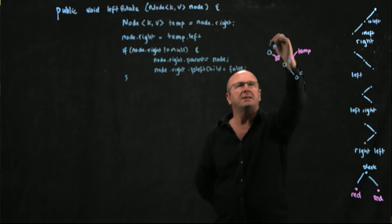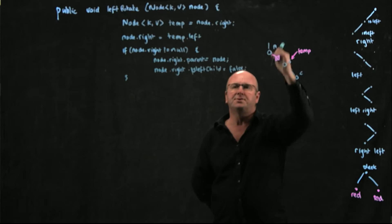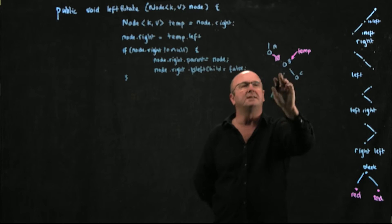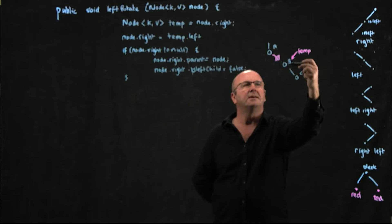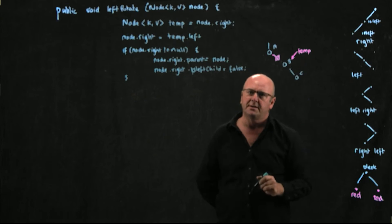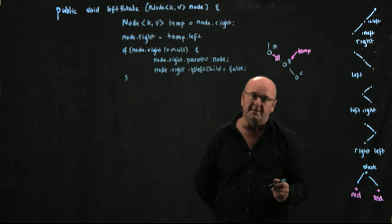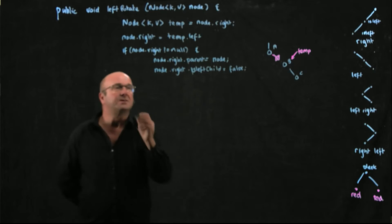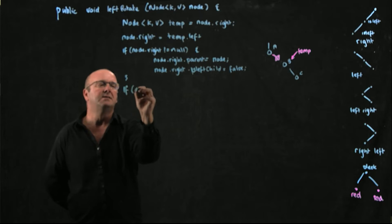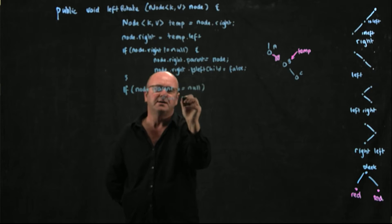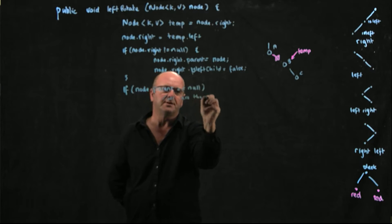Now what we need to do is check whether we have a parent. If we have a parent, we need to set temp's parent to point to our parent. If we don't have a parent, that means we're the root node. So if node dot parent is null, we are the root node.